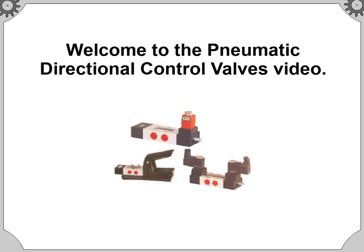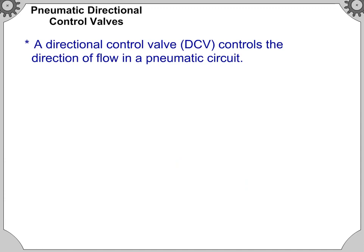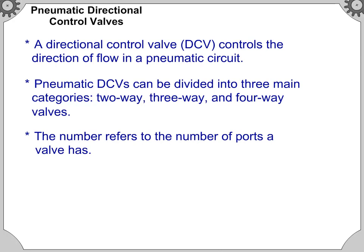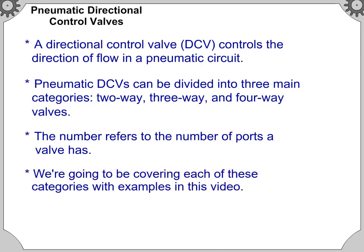Welcome to the pneumatic directional control valves video. A directional control valve (DCV) controls the direction of flow in a pneumatic circuit. Pneumatic DCVs can be divided into three main categories: two-way, three-way, and four-way valves. The number refers to the number of ports a valve has. We're going to be covering each of these categories with examples in this video.